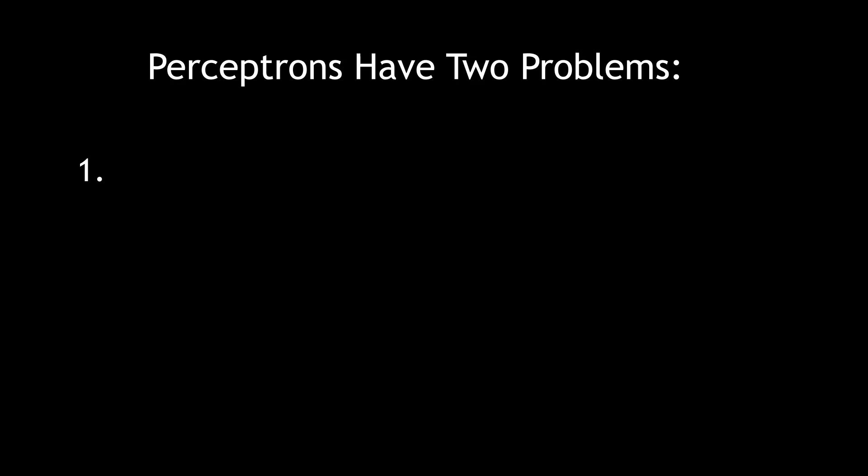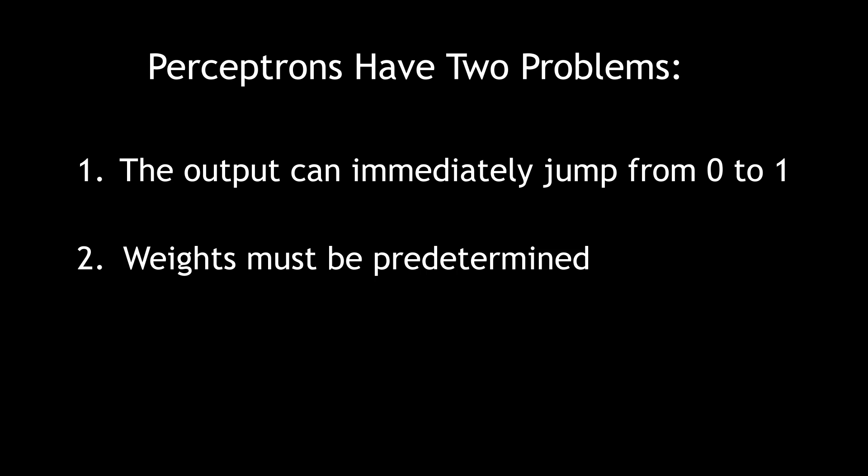Firstly, the output from a perceptron can immediately jump between 0 and 1. Making a small change to the weights or bias can lead to an entirely different result. Secondly, the weights must be predetermined, and we might not always choose the most suitable values. So we would like a way for the system to be able to adjust the weights itself in order to minimize error when making predictions.